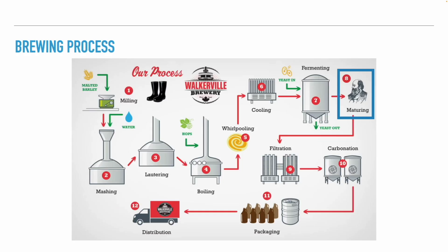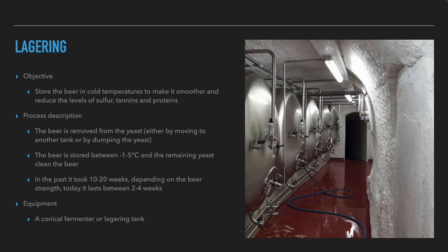After fermentation, the beer goes to the maturing stage. Lagering — from the German word meaning to cellar — involves storing the beer at cold temperatures to make it smoother and reduce the levels of sulfur, tannins, and proteins. The beer is removed from the yeast by transferring it to another tank or by dumping the yeast from the bottom of the fermenter, then stored between minus 1 to 5 degrees Celsius. In the past this stage took 10 to 20 weeks depending on beer strength, but today, due to beer research, it usually takes 2 to 4 weeks. The equipment needed is a cylindroconical fermenter with a yeast dump option, or a separate lagering tank.